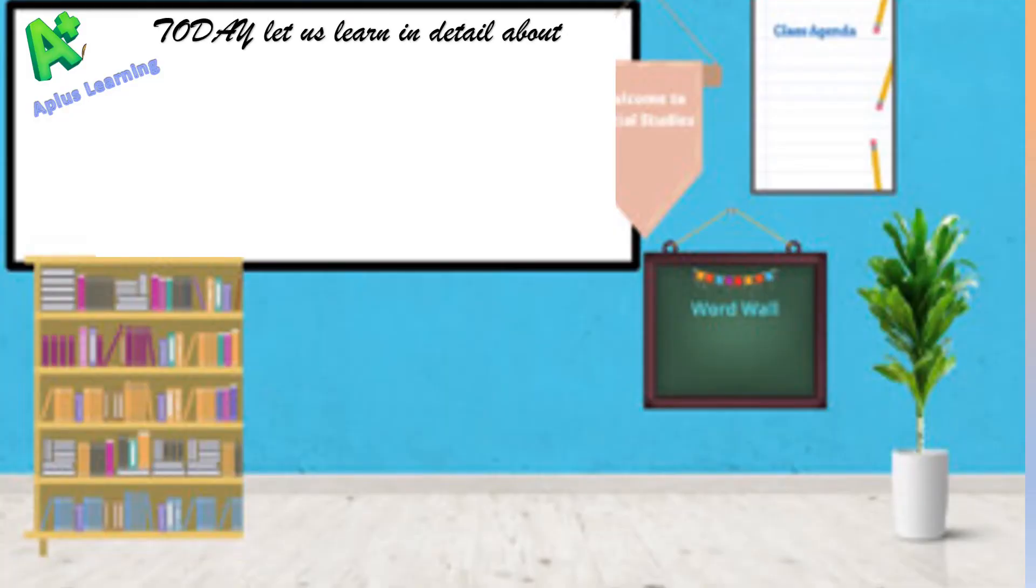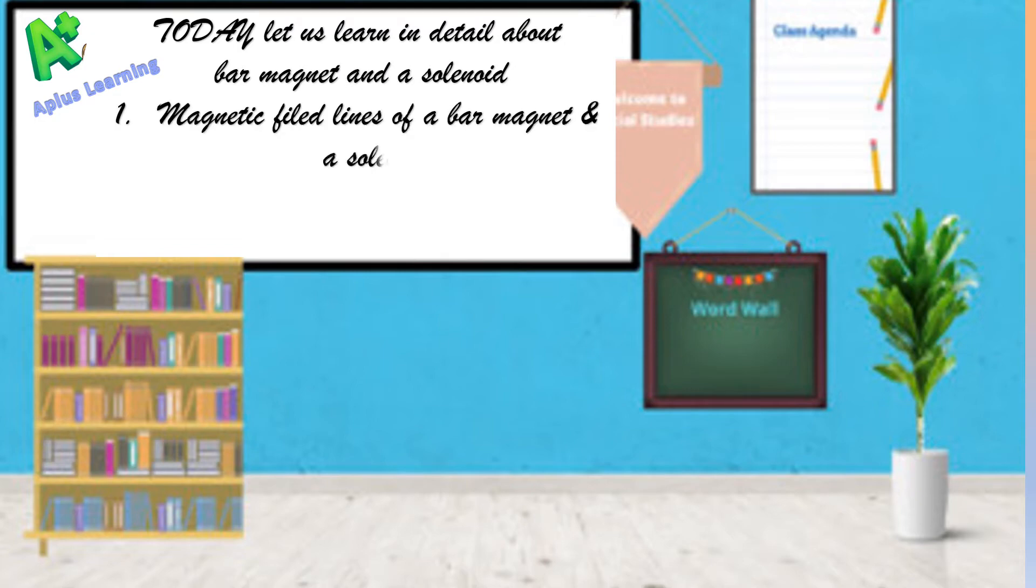Today let us learn in detail about a bar magnet and a solenoid. The first thing we will learn is the magnetic field lines of a bar magnet and a solenoid. Then secondly, the difference between a bar magnet and a solenoid.